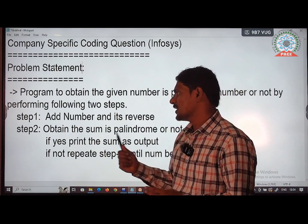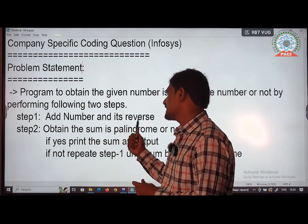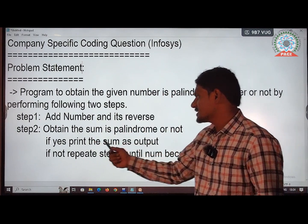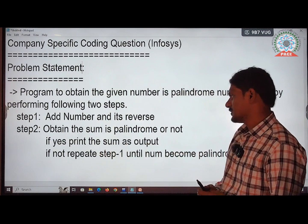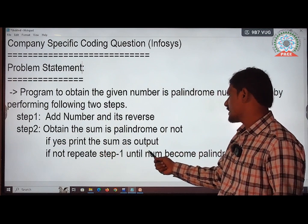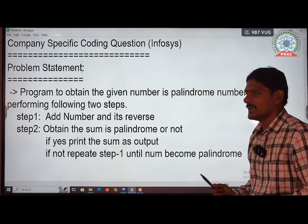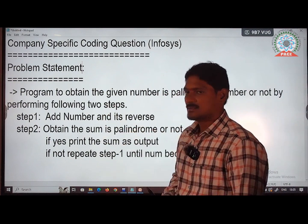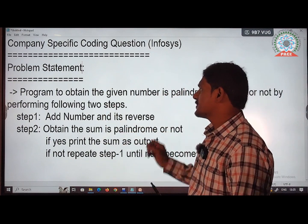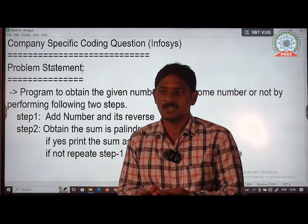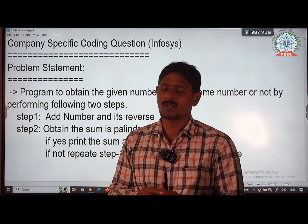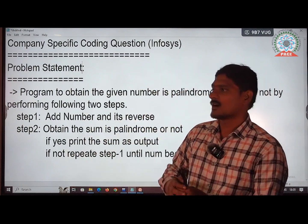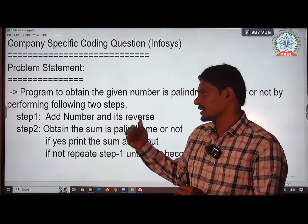Step one is: add the number and its reverse, and obtain whether that sum is a palindrome or not. If yes, print that sum as the output. If not, repeat step one until the number becomes a palindrome. Using these two steps, we can determine whether the number is a palindrome. This is an advanced coding question on palindrome numbers.